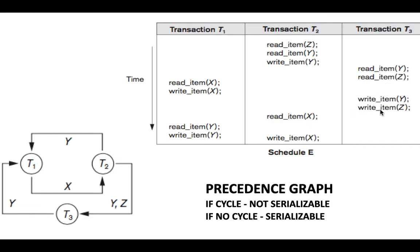There is no write X in T3, so no conflict there. Next is read Y in T1. For this to conflict there should be a write Y in T2 or T3. Write Y in T2 exists, so we draw an arrow from T2 to T1 labeled Y. We also check T3: write Y in T3 exists, so we draw an arrow from T3 to T1 labeled Y.